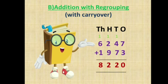First we add the ones digit. 7 plus 3 is 10. 0 goes here and 1 carries over to the tens place. Then 4 plus 7 is 11, plus 1 is 12. 2 goes here and 1 carries over to the hundreds place. 9 plus 2 is 11, plus 1 is 12. 2 goes in the hundreds place and 1 carries over to the thousands place. 6 plus 1 is 7, plus 1 is 8. The answer is 8220, and in this sum we had to carryover the numbers.